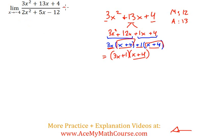So that's what we have in the numerator. What about the denominator? We're going to have to go through the same thing. So two numbers that multiply to whatever 2 and negative 12 multiply to, which is negative 24. And the two numbers need to add up to the middle term, which is 5. What two numbers multiply to negative 24 and add up to 5?